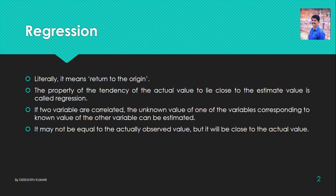To simplify it: if two variables are correlated, the unknown value of one of the variables corresponding to the known value of the other variable can be estimated. The estimated value may not be equal to the actually observed value, but it will be close to the actual value. When the value is estimated, it may not be exactly equal to the actual value — it is somewhat closer. This estimation is what regression refers to.